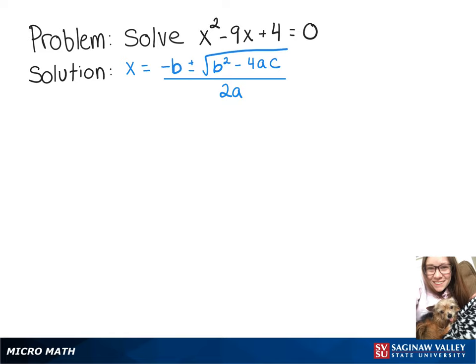We're going to solve x squared minus 9x plus 4 equals 0 using the quadratic formula. So we'll have x equals negative negative 9, so positive 9,